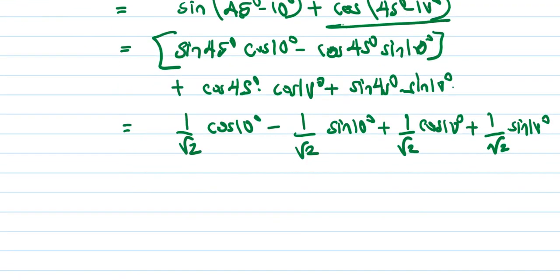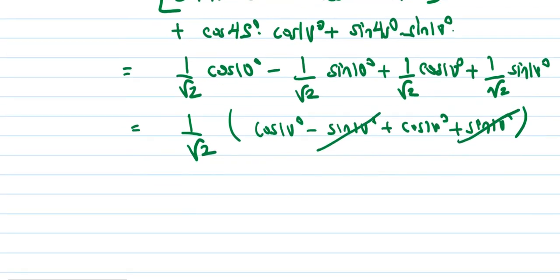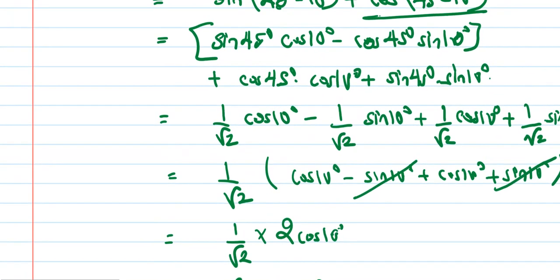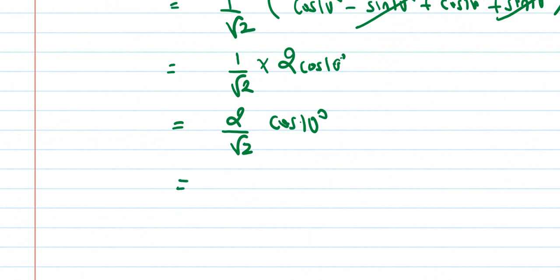Taking 1/√2 common: (1/√2)[cos10° − sin10° + cos10° + sin10°]. The −sin10° and +sin10° cancel out, leaving (1/√2)[2·cos10°], which equals 2/√2 · cos10°, and 2/√2 simplifies to √2.